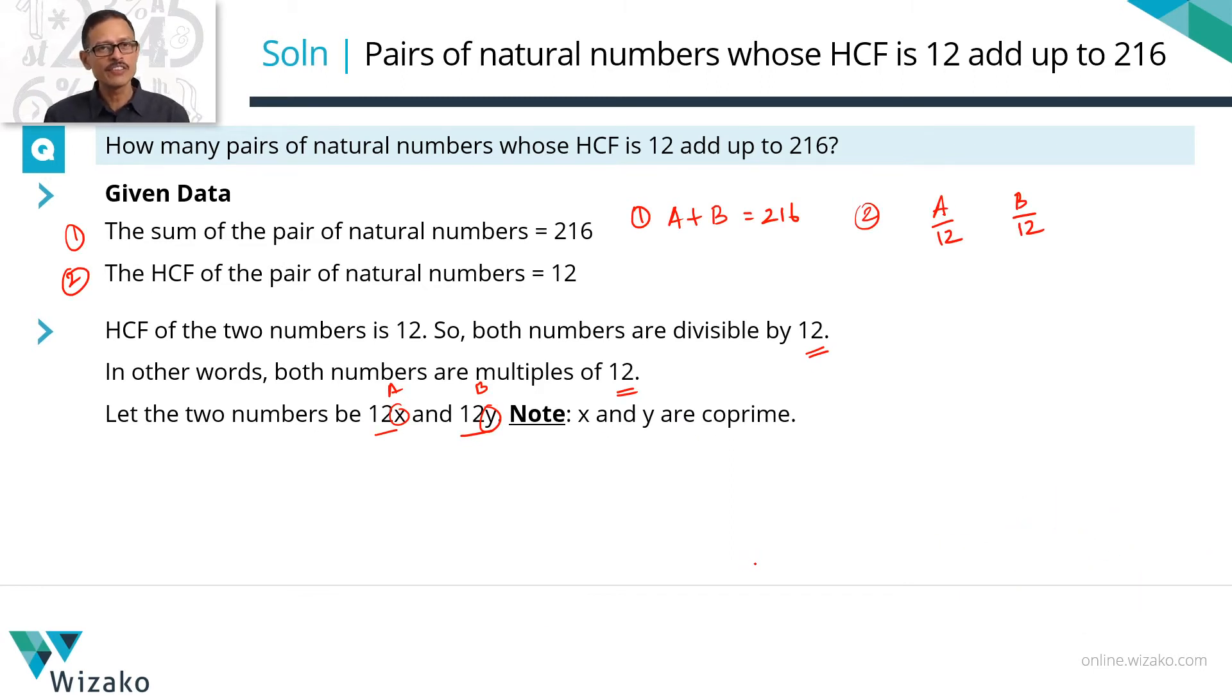So because the HCF of these two numbers is 12, we can write both these numbers as 12x and 12y, such that x and y are coprime to each other.